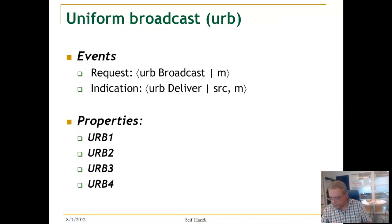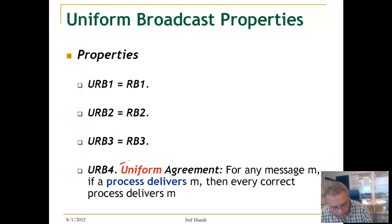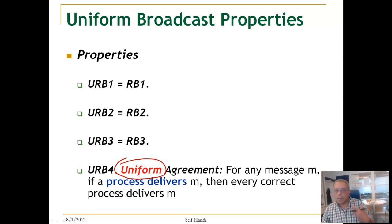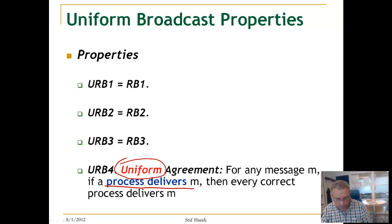Here is the specification of uniform reliable broadcast. The interface is the usual one — broadcast and deliver. We have changed only the uniform agreement property: if a message is delivered by any process, then all correct processes must deliver the message. So far, we have specified best effort broadcast, reliable broadcast, and uniform reliable broadcast. Uniform reliable broadcast gives guarantees also on processes that deliver the message and then fail — all other correct processes must deliver the message.